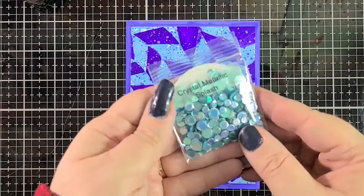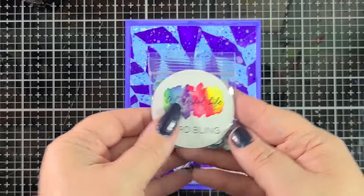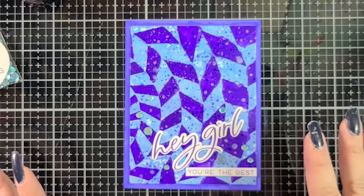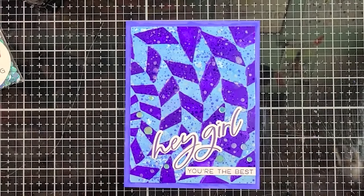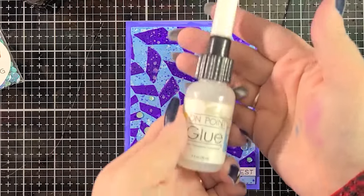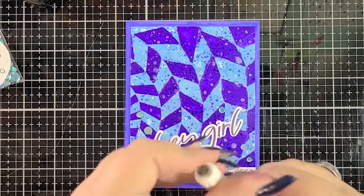I grabbed the Crystal Metallic Splash card bling from A Colorful Life Designs. And I placed them on here. I think that it looks all right. It might not be perfect, but I think it's all right. I've got my On Point glue. This is my favorite glue to use for adhering sequins.